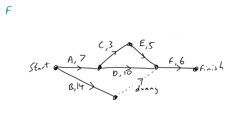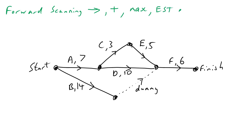Now I'm going to do some forward scanning, which will help us find a lot of information including the critical path and floats. Forward scanning: you go forwards, you add your numbers, and you take the maximum if you have a choice. This gives you the EST — the Earliest Start Time. Then we'll do backward scanning, which is pretty much the opposite.